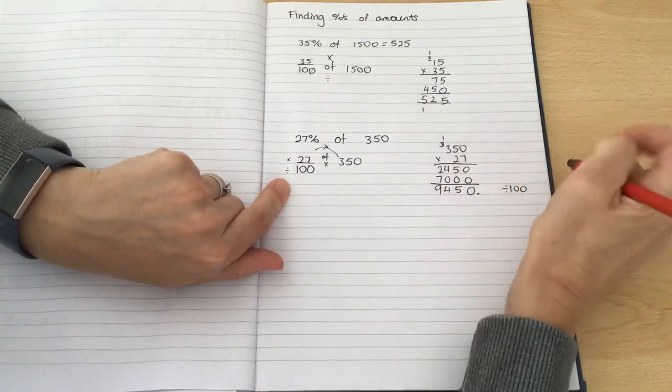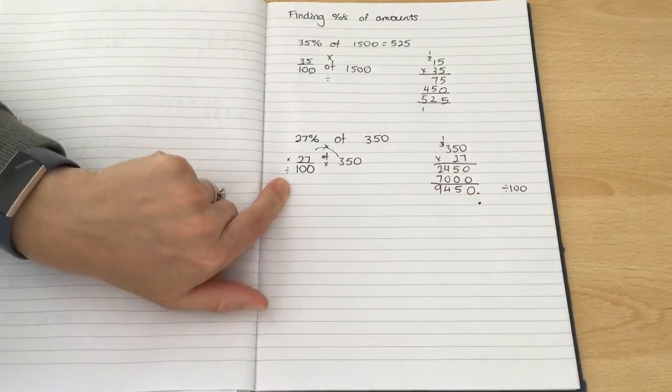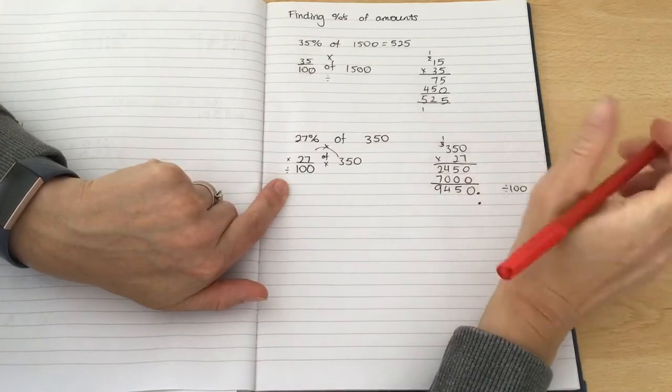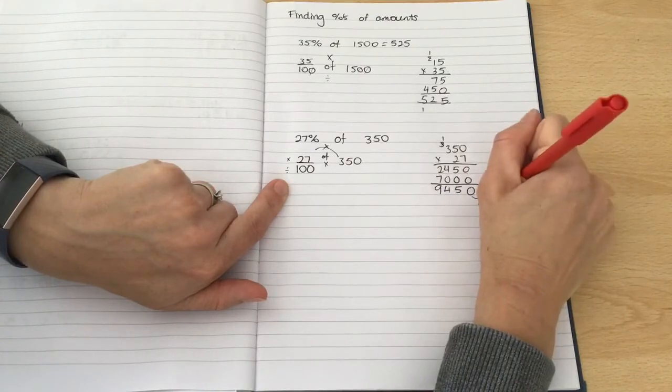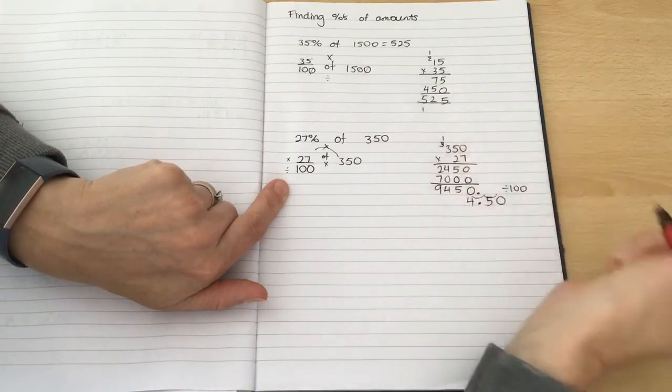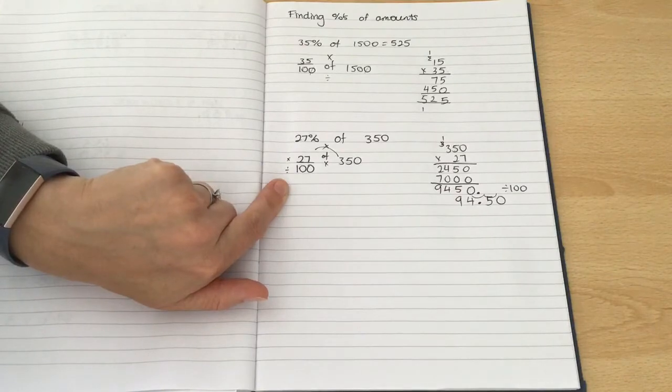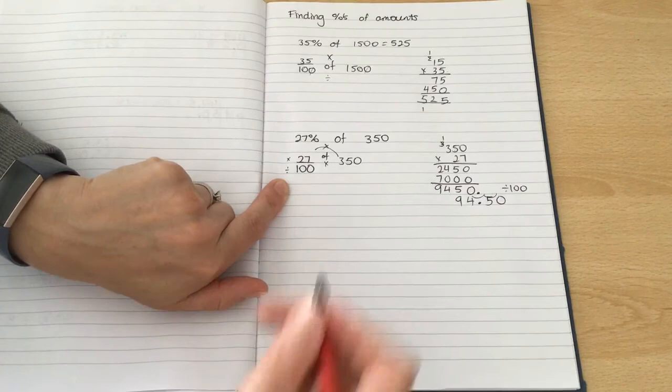And if you remember from last week when we're dividing by 100, we're going to put our decimal place in and we're going to move everything back two places. 1, 2. The 0 goes there. 5 follows. The 4 comes over here and the 9 comes over this way. So we end up with 94.50 or 94.5.